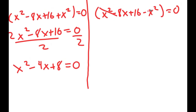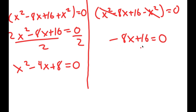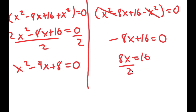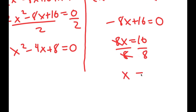From my right-hand side, the x squared terms cancel out, and I get negative 8x plus 16 is equal to 0. I'm going to add 8x on both sides to get 8x equals 16, then divide both sides by 8. These cancel out and I get x equals 2.